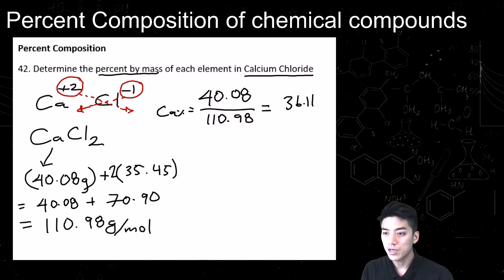And we're going to get 36.11% is calcium. Chlorine makes up 70.9 in this compound, and we're going to divide that by 110.98, leaving us with 63.89%. So those are the percentages of calcium and chlorine in calcium chloride, and that is known as percent composition.